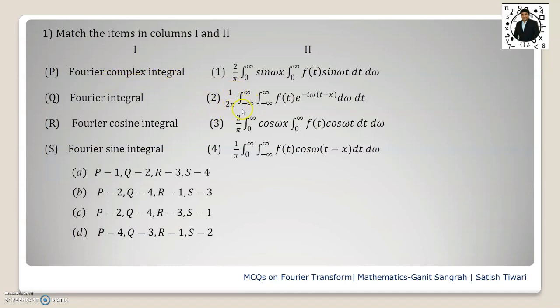It is 1 by 2π integral minus infinity to plus infinity, minus infinity to plus infinity, f(t) e to the power iω(t-x) dω dt. So the correct pair of P is 2. That you will observe in option b and c. So out of these two options, one will be correct.